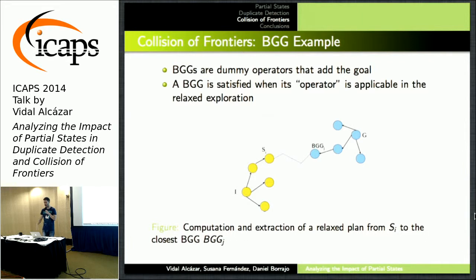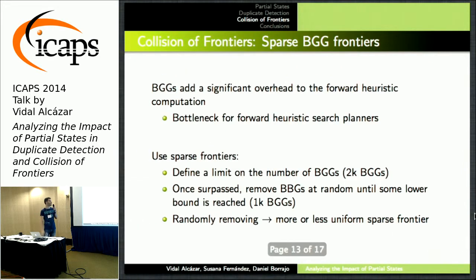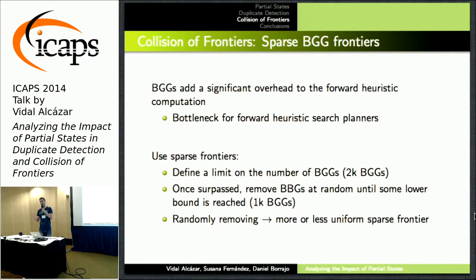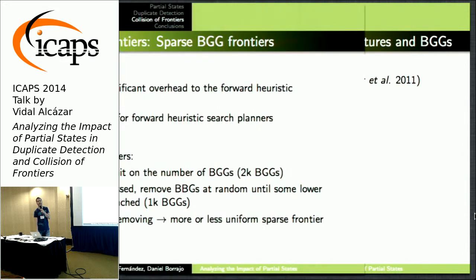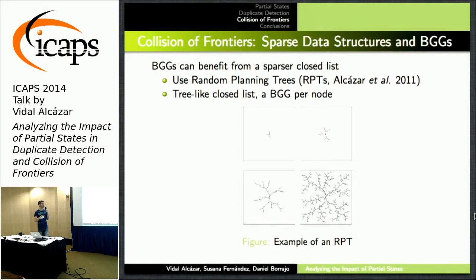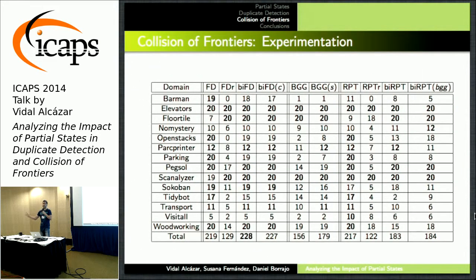There are two alternatives to handle BDD size. First, keep bounds on the size of the BDDs — 200k nodes, then 1,000k — and try to find a representative set of BDDs encoding what the frontier looks like. Second, use sparse data structures: instead of greedy best-first search, use random planning trees, which alternately go to unexplored areas of the search space. This is really a teaser, as the talk is quite short.